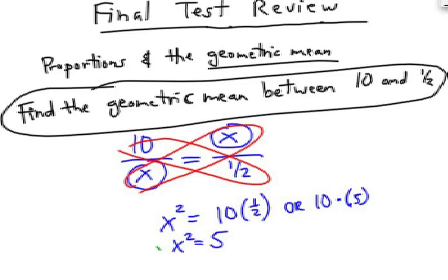And now you need to find the square root of both sides. And so my answer is going to be the square root of 5 or about 2.24.